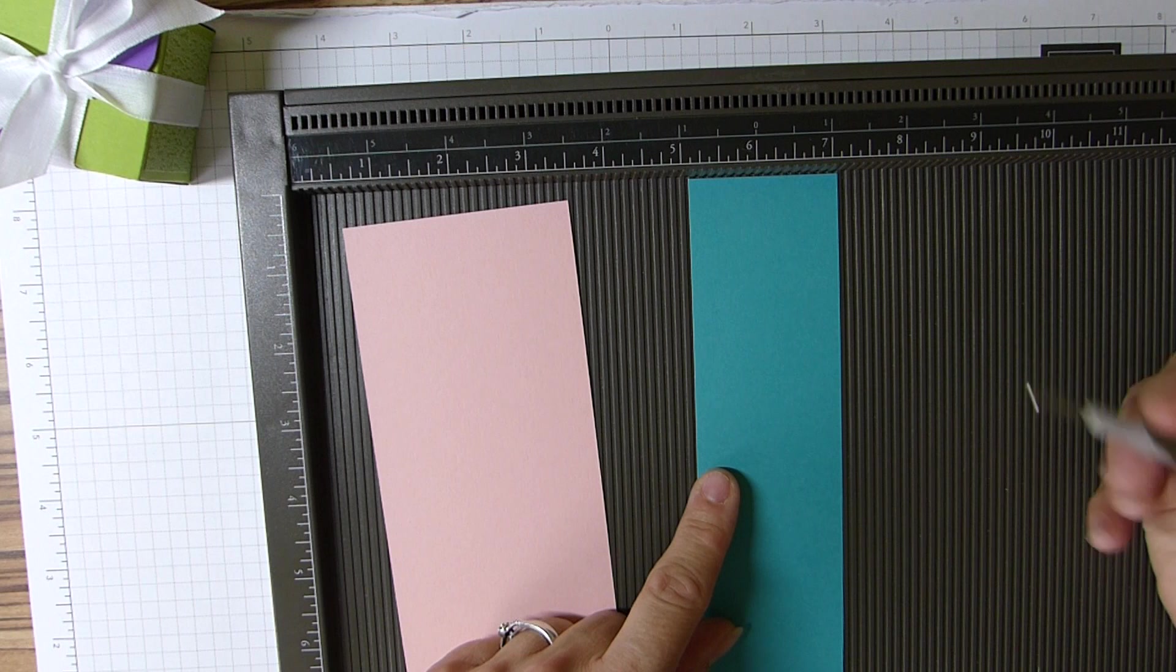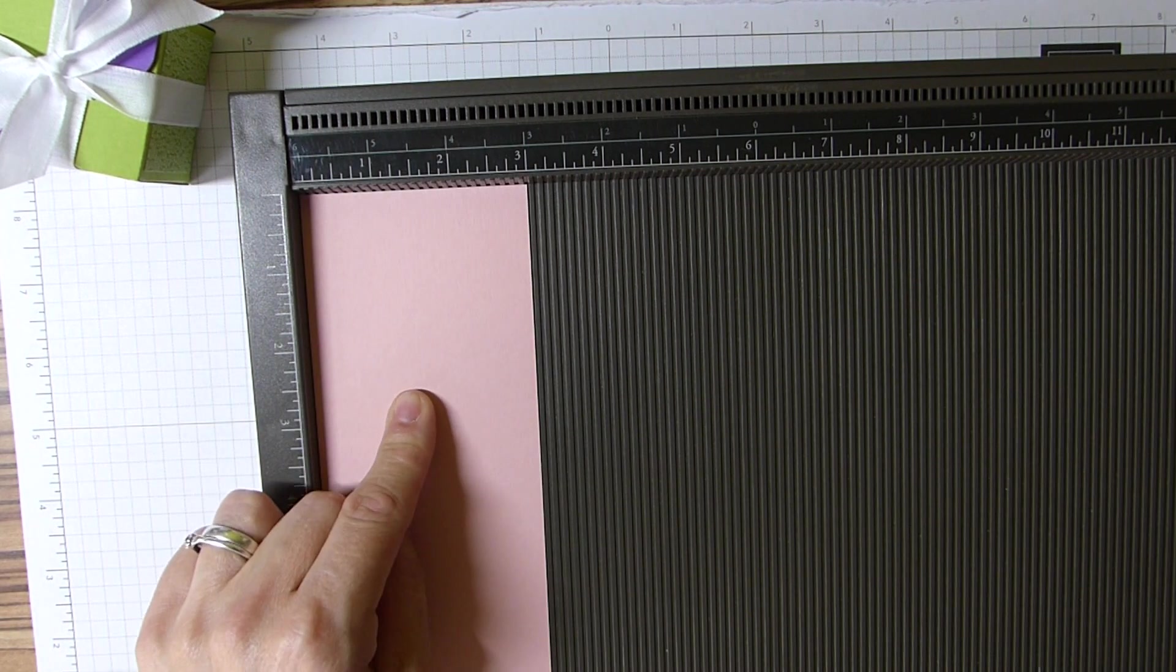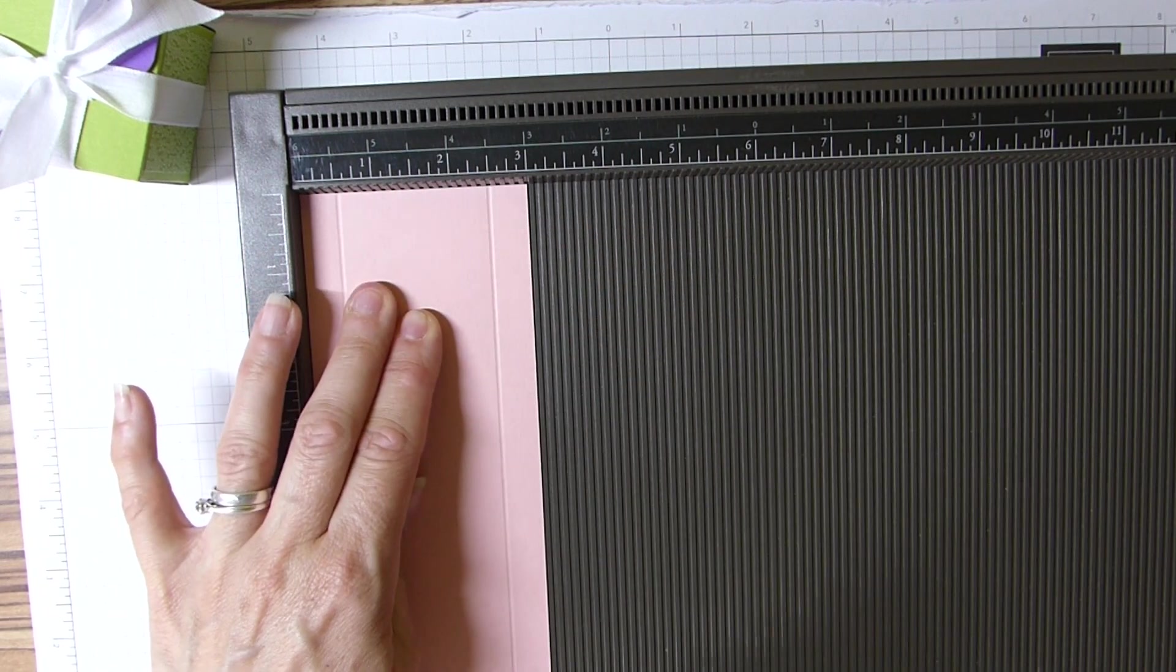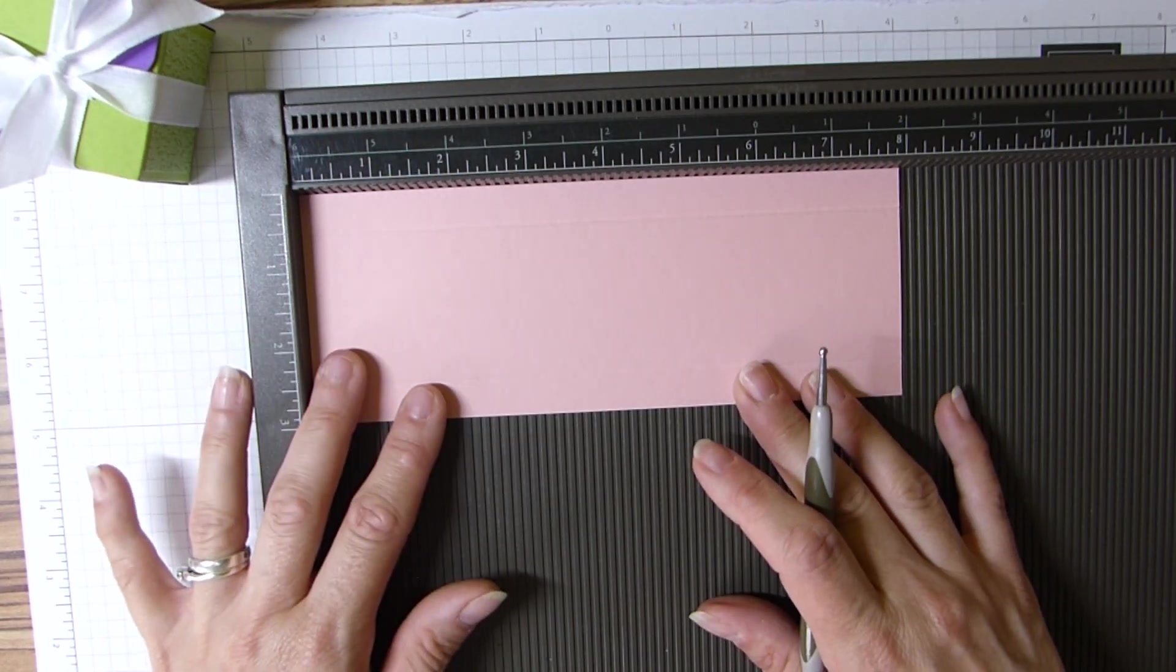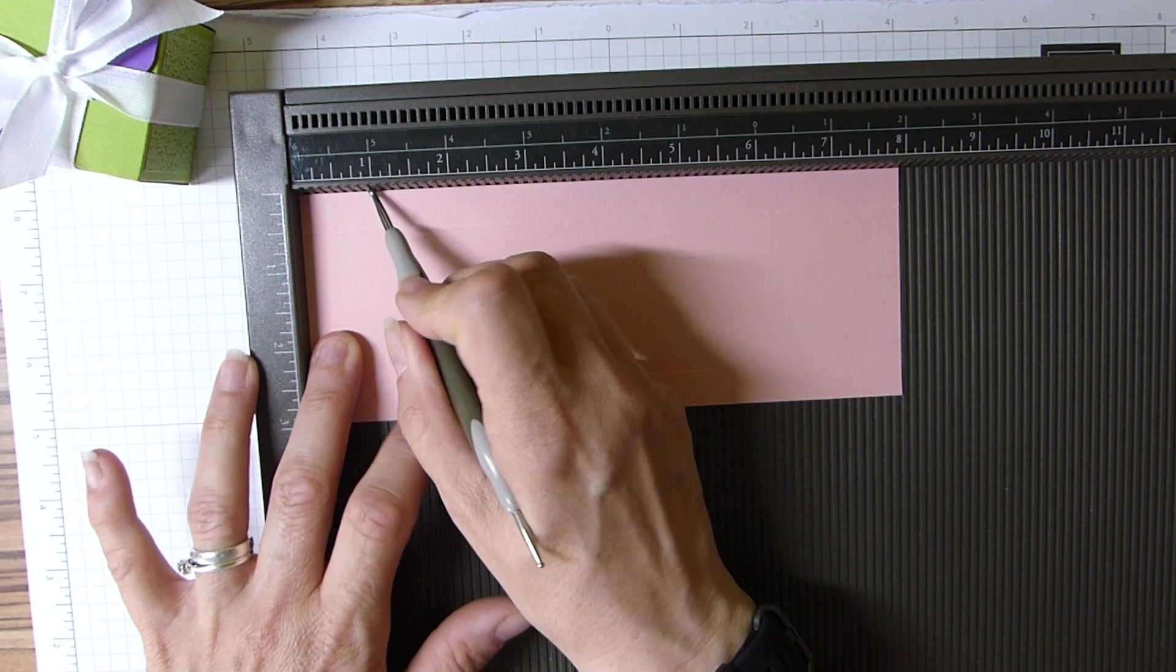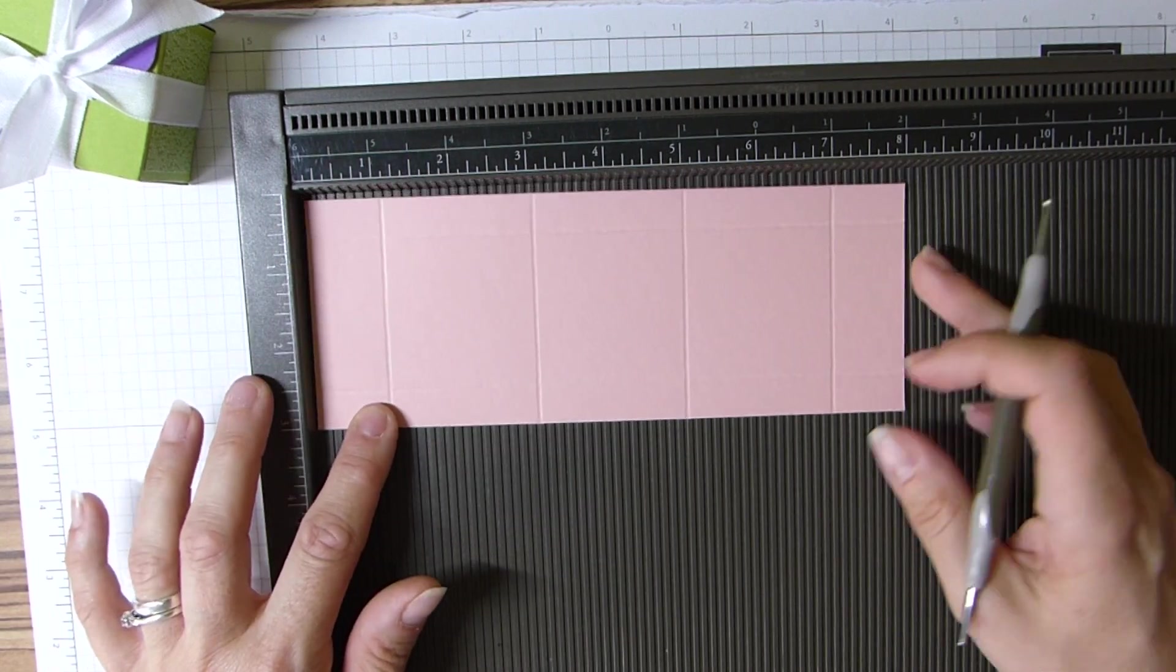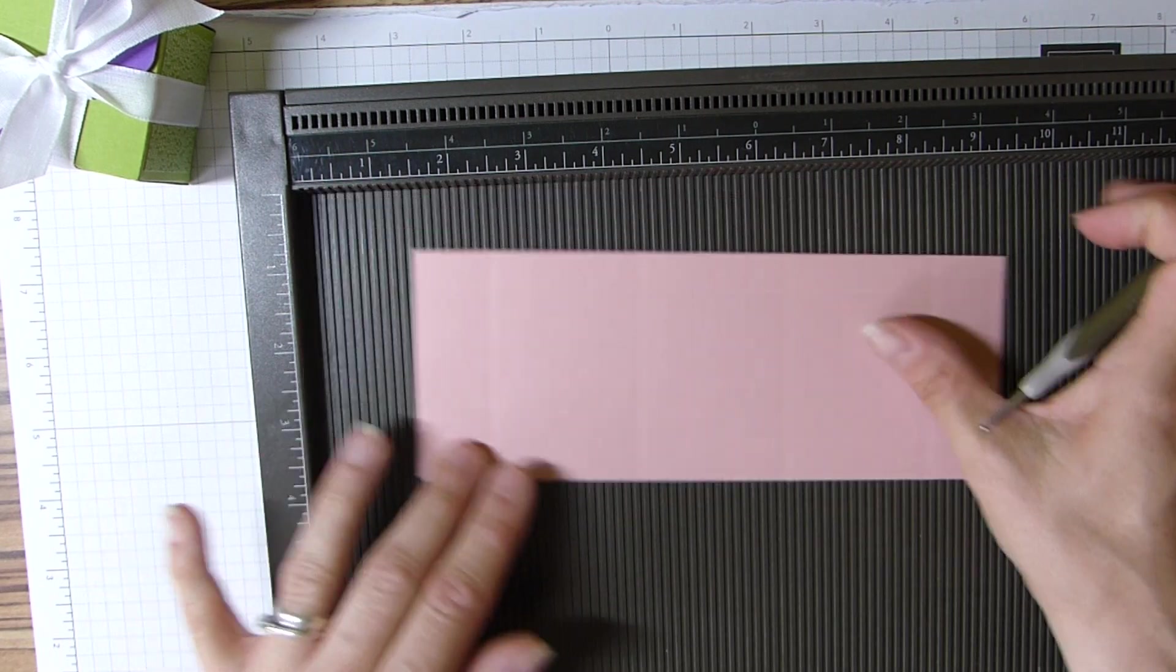On your 8 by 3, on the short side we're going to score at half an inch and two and a half, which will be 1 and 6 centimeters. Then we're going to rotate it and score on the long side at 1, 3, 5, and 7 inches, which will be 2.5, 7.5, 12.5, and 17.5 centimeters.